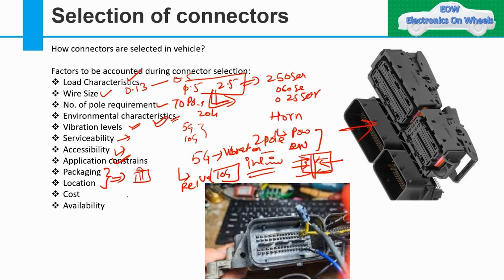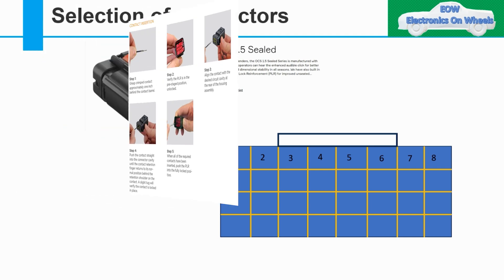Finally, cost and availability. The connector you select may be very costly, so you have to consider costing within the budget allocated for that harness — if it exceeds that cost, there is no use in selecting it. Availability is equally important: if the connector is very rare in the aftermarket, that is also a tricky situation you need to account for during connector selection.